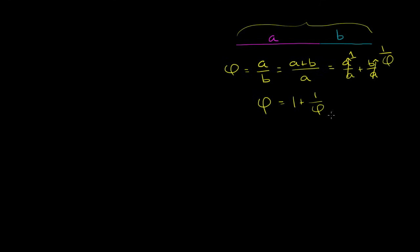That is a neat statement. If you subtract 1 from both sides of this, you get phi minus 1 is equal to its inverse. That seems to be a pretty neat property — that if I just subtract 1 from this number, I get its multiplicative inverse. And this statement is also interesting because we've defined phi in terms of 1 plus 1 over phi.